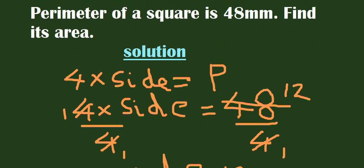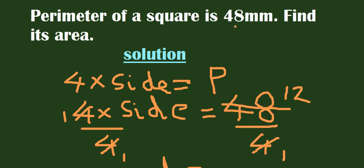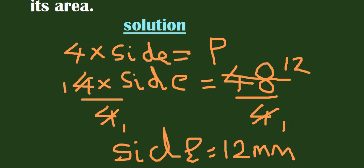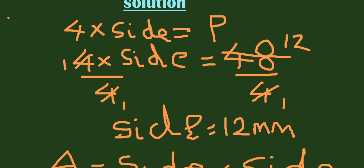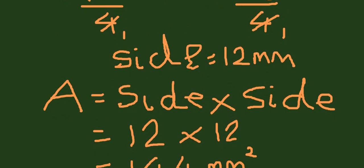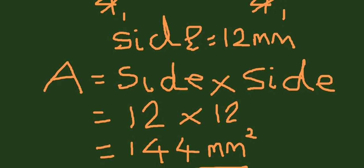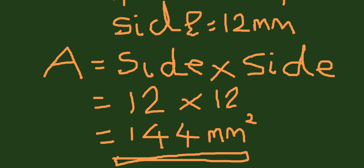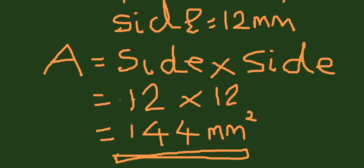Looking at our question: the perimeter of a square is 48 millimeters, and we are finding its area. We put the formula for perimeter which is 4 times side, set it equal to 48, then divide by 4 on both sides. After simplification we get the length of one side which is 12 millimeters. Then we write the formula for area of a square — side times side — and 12 times 12 gives us the answer: 144 millimeters squared. And this is our answer.